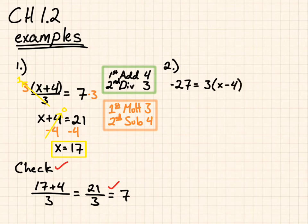Next. Negative 27 equals 3 times the quantity x minus 4. So, because there's parenthesis, we have to take that into account. So, what is happening first to our variable? First, we are subtracting 4. And then second, we are multiplying by 3.